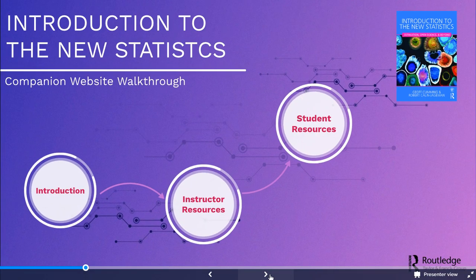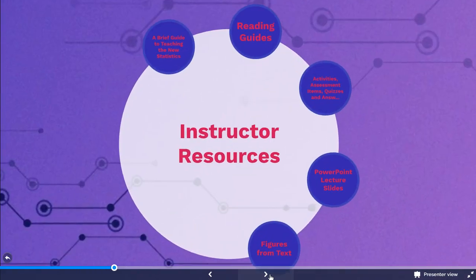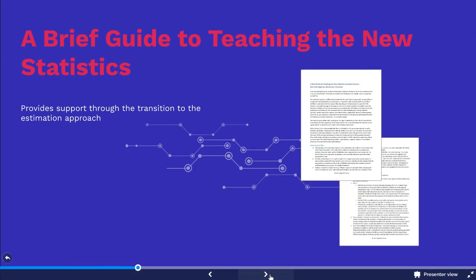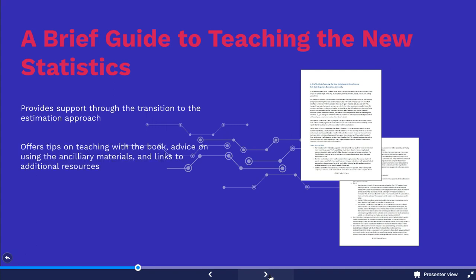Now let's take a look at the resources provided for instructors. The instructor's resources are there to help you as a course leader save time and to ensure that your students are fully engaging with the content of the book and the course. The first thing you will find under the instructor resources is a brief guide to teaching the new statistics. This guide provides you with the support you need to switch your class to the estimation approach, offering tips on teaching with the book, advice on the ancillary materials provided, links to additional resources, and information on how to use the instant feedback assessment technique should you decide to use it in class.